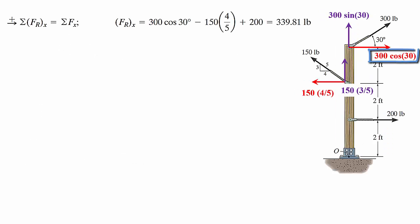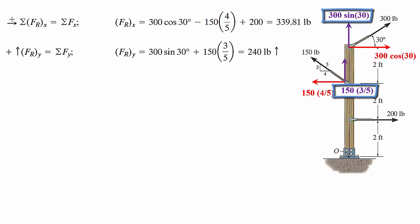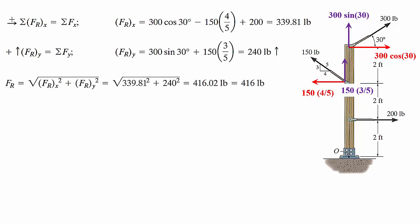If I apply them, I will have 300 cosine 30 minus 150 times 5 over 4 plus 200. That will give me 339.81 pounds. Now if I apply the summation of the forces in the y direction, I will have 300 sine 30 plus 150 times 3 over 5 and that will give me 240. Now I get the resultant force by taking the square root of the sum of the squares and I will have 416.02 pounds, which is approximately 416 pounds. And then for the angle, I'll take the inverse of the tangent, which is 240 over 339.81. Take tan inverse and I will have 35.23. That should give me 35.2 to make it simpler.